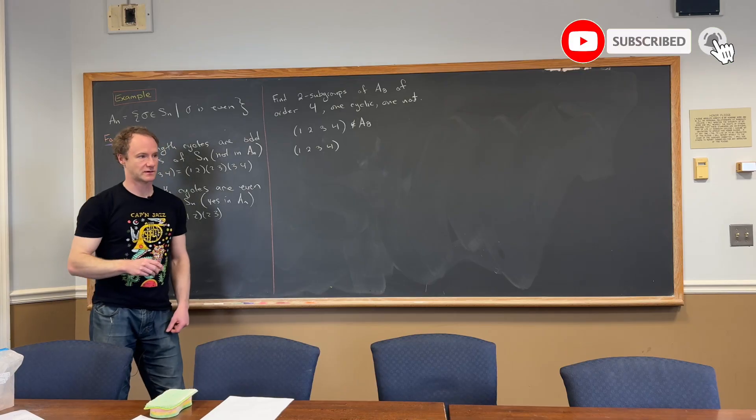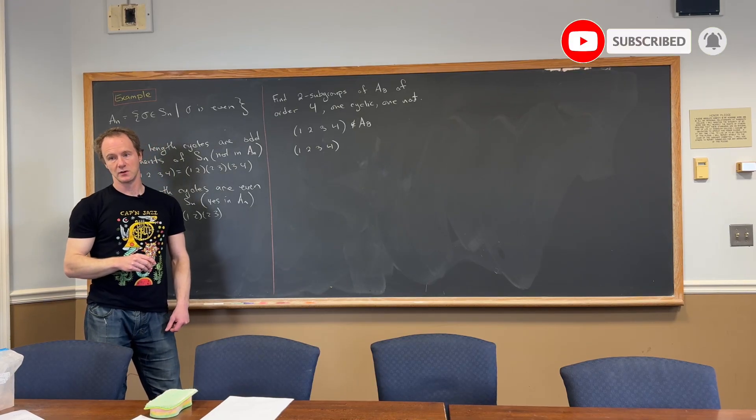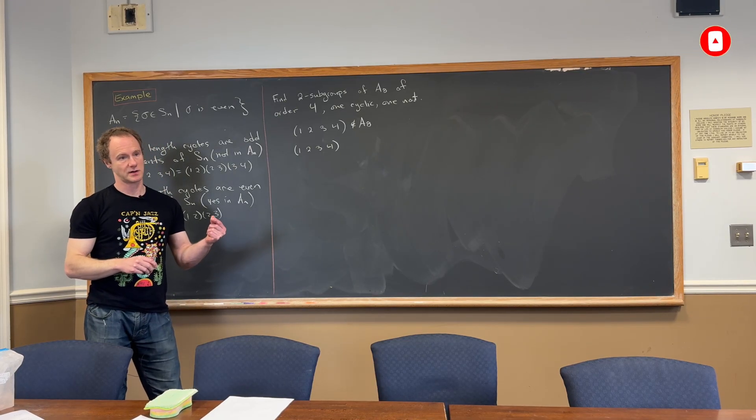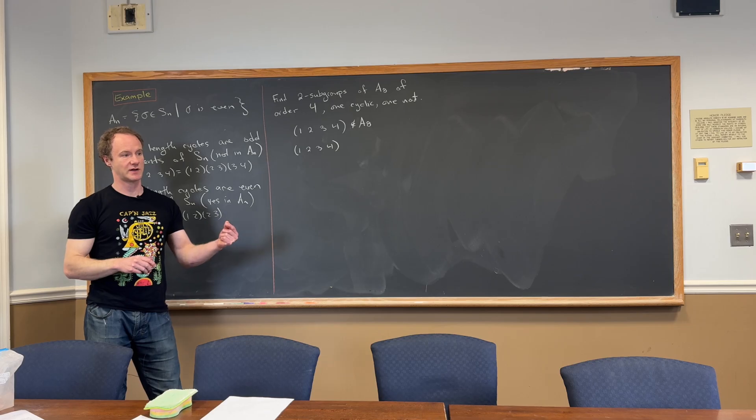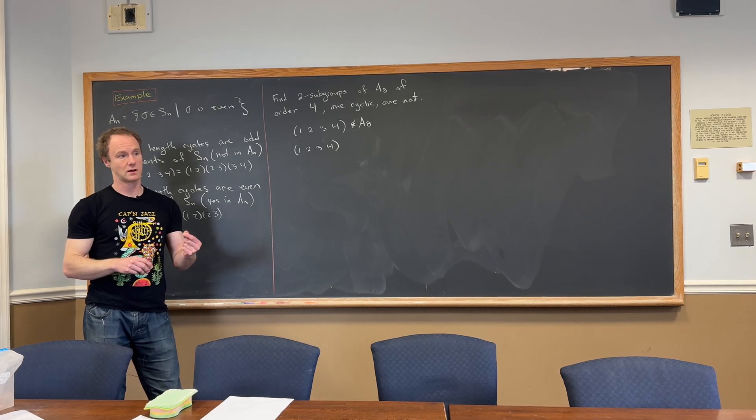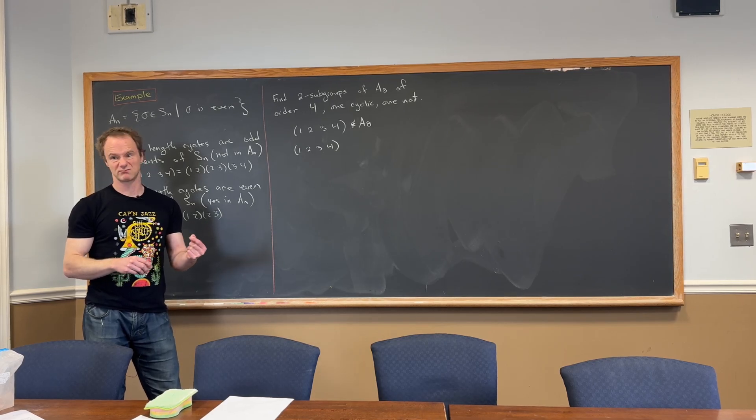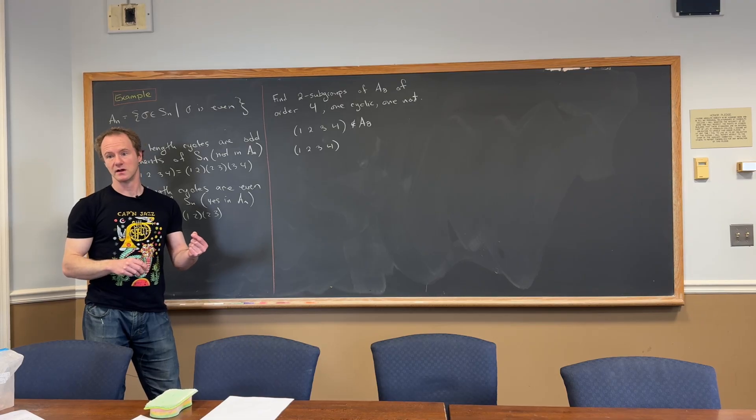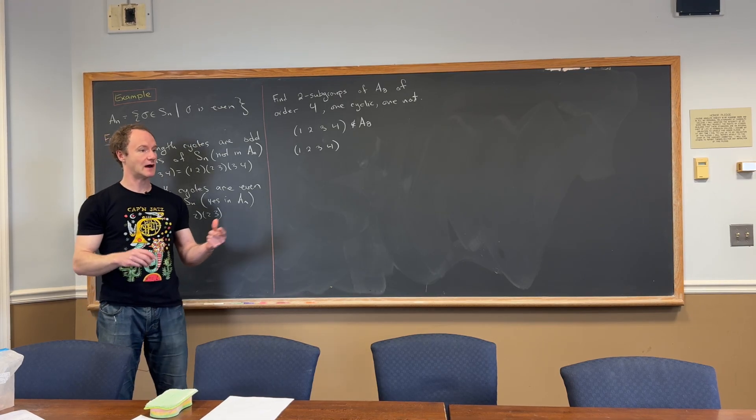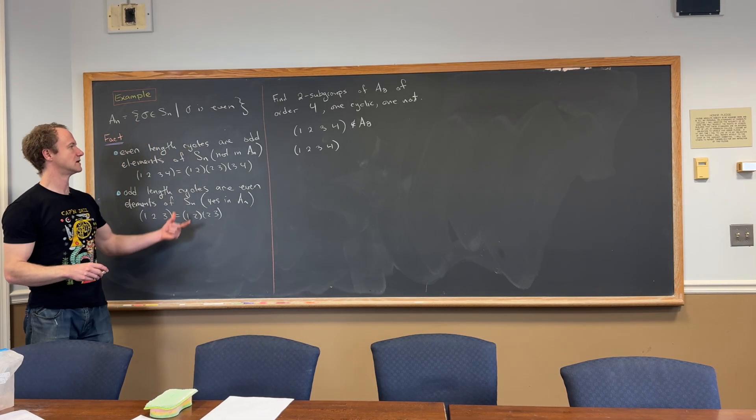There are a couple of different ways. So this is an odd element. But if you take the product of an odd element and an odd element, you get an even element. This is the product not in the numbers, but the product in Sn.